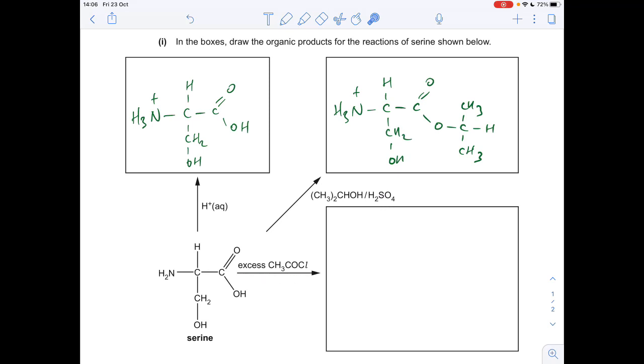So finally, the reaction of ethanoyl chloride with serine. It can actually react in two parts, that's why they've said excess. It can react with the alcohol and form an ester group, and it can also react with this part here, the amine group, and form an amide. So I'll just draw the structure up and then you can see what it would look like.